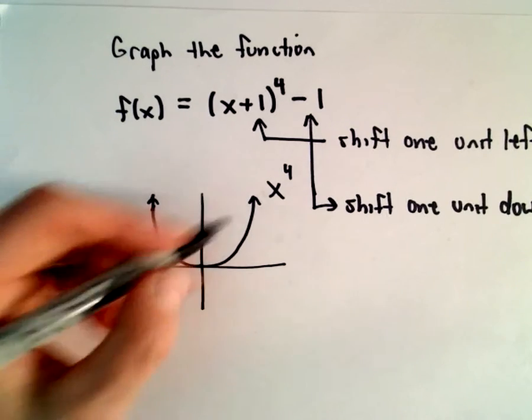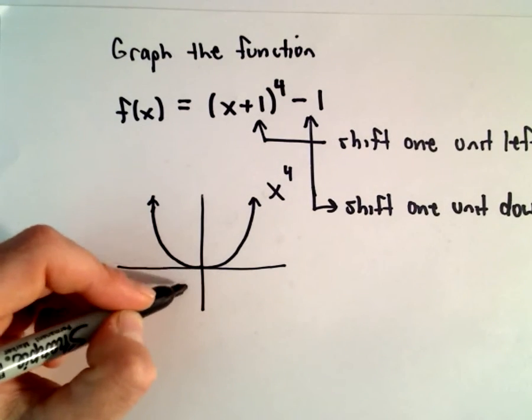So it's basically going to take our graph of x^4, one unit to the left, one unit down.